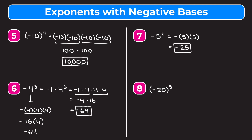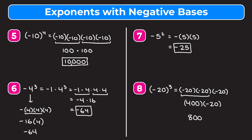Our last example is the quantity of negative 20 raised to the third, which means we multiply negative 20 by itself three times. Negative 20 times negative 20 becomes positive 400, and then we multiply by negative 20. To multiply 400 by negative 20, multiply 4 and 2 to get 8, then add the three zeros. Our answer is negative because we multiplied a positive by a negative, so we get negative 8,000.